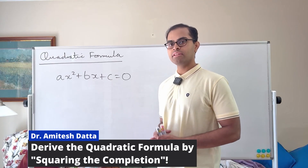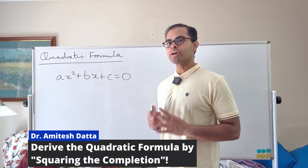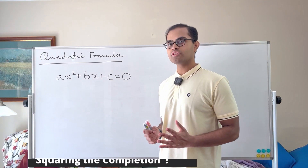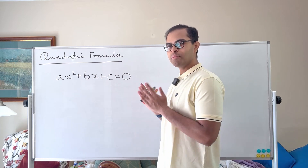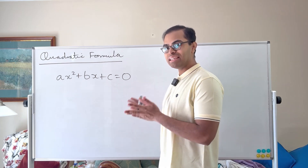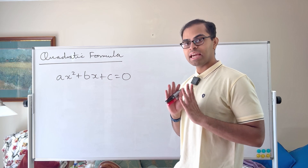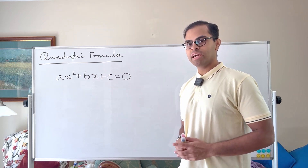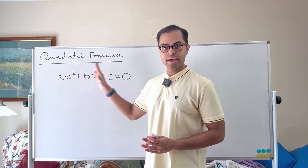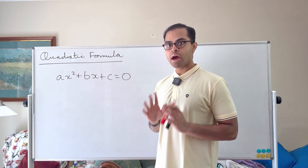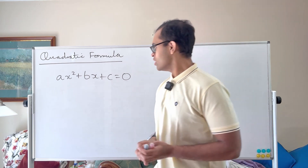Have you seen this innovative method to derive the quadratic formula? We're not going to complete the square — we're going to square the completion. And it's going to be super beautiful and easy to understand. So here we have the quadratic equation ax² + bx + c. We want a formula for x in terms of a, b, and c. And we're going to derive it using the following trick.